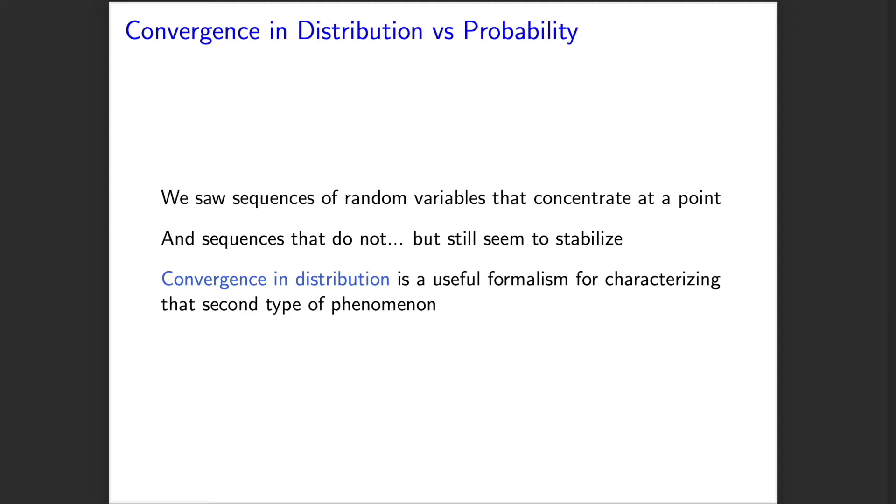However, we noticed that certain sequences of random variables don't concentrate at a point, but do have distributions that seem to stabilize. When engaging with those sequences of random variables, the notion of convergence in distribution will be quite useful for formalizing what we previously saw.